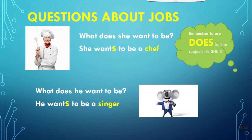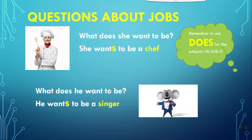Now we have questions about jobs. As you can see, we have two pictures. The first one is about a chef, and the question says: what does she want to be? She wants to be a chef — yes, of course! Then we have a singer, and the question says: what does he want to be? He wants to be a singer.